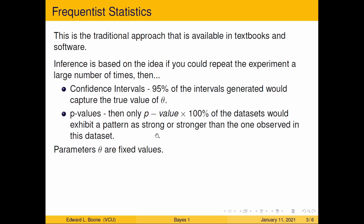The frequentist is probably the one you're familiar with. It's what's taught in most undergraduate courses, it's what's in textbooks, it's what's in software — it's the most ubiquitous version of statistics out there. Here, the inference is based on the idea that if you could repeat the experiment a large number of times, then 95% of the confidence intervals generated would capture the true value of theta. So if you did this a thousand times and calculated a 95% confidence interval, 950 of the thousand would actually have captured the true underlying value of theta.